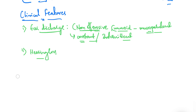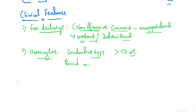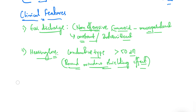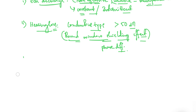The second symptom is hearing loss, which is mostly of the conductive type and generally does not exceed 50 decibels. Interestingly, sometimes the patient hears better in the presence of discharge — this is called the round window shielding effect. When discharge is present the person hears better; when the ear is dry, hearing loss worsens, due to a phase differential between the two windows.